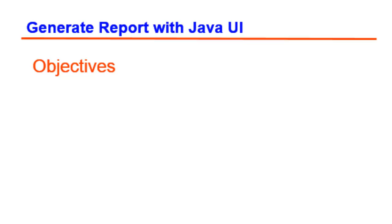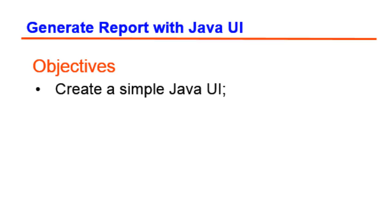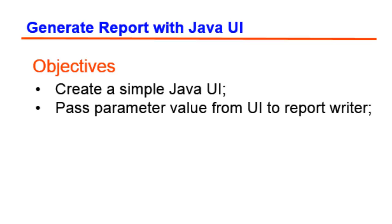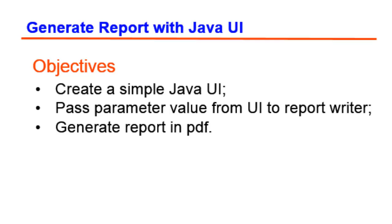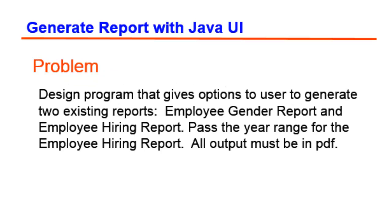Hello, welcome back. On this session, let us create a Java program that will drive the report writer to generate a PDF report. We will use existing reports that we created from previous lessons. We pass a parameter value from a UI and produce the reports we want. We will use existing reports: employee gender report and employee hiring report. All output must be in PDF.